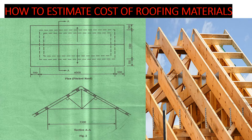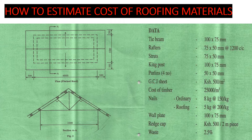We have data to guide us. The tie beam is size 100 by 75mm. The rafters are 75 by 50mm spaced at 1200mm center to center. The struts are 75 by 50mm. The king post is 100 by 75mm. Purlins are 50 by 50mm. GCR sheets cost 500 shillings per meter square. Cost of timber is 25,000 per cubic meter. We also have ordinary nails, wall plate, ridge, curve, and waste. On this video I'll concentrate on the tie beam, rafter, struts, king post, purlins, and wall plate, since we've already done the iron sheets.